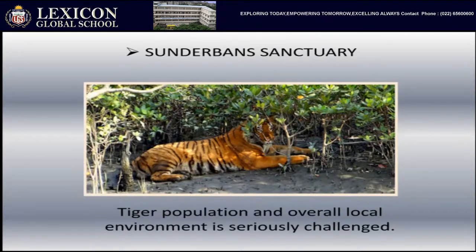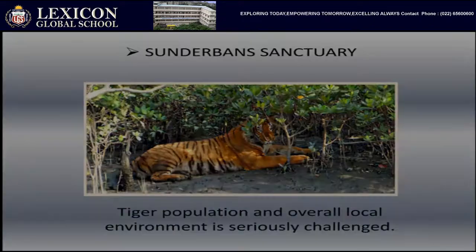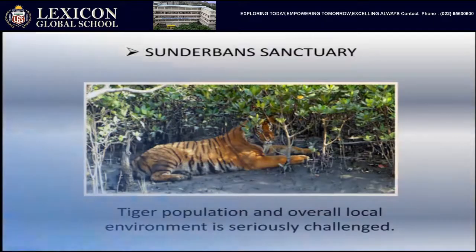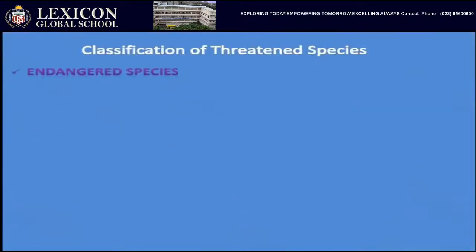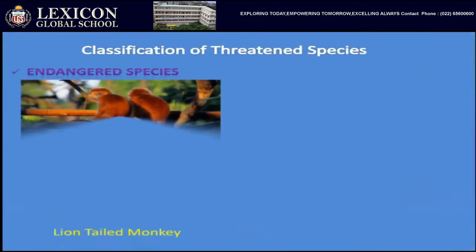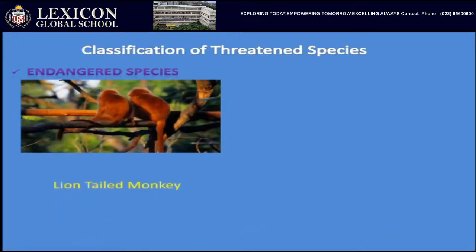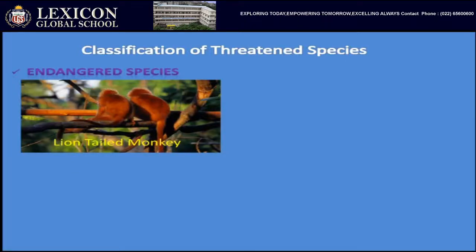We will classify threatened species in the world. First are endangered species — the number of organisms has declined, habitats have been affected, which can lead to extinction. Examples of animals classified under endangered species are the lion-tailed monkey and the lesser florican.